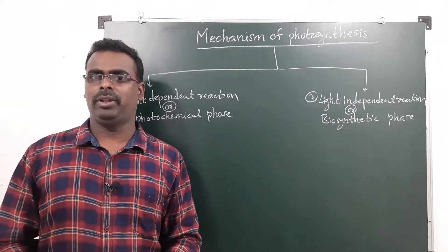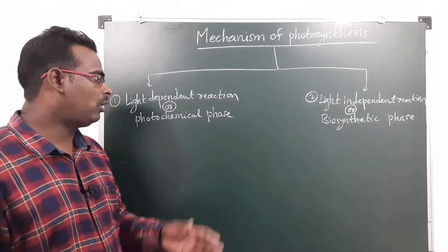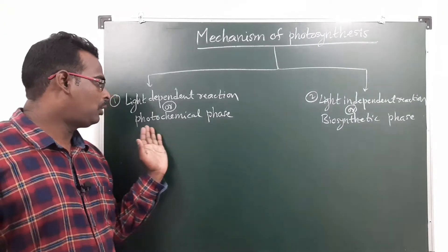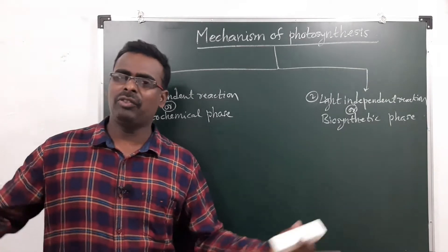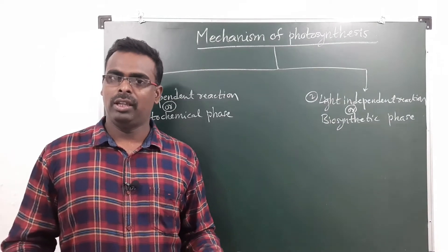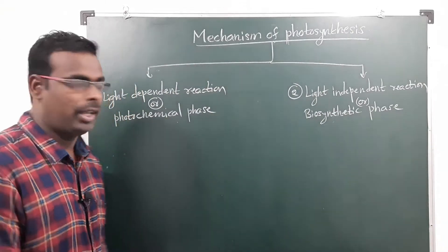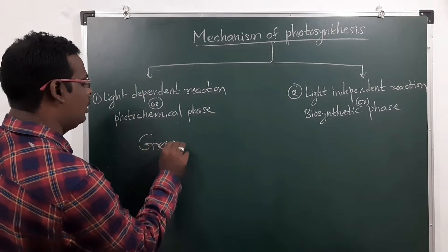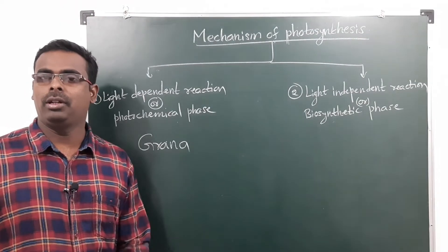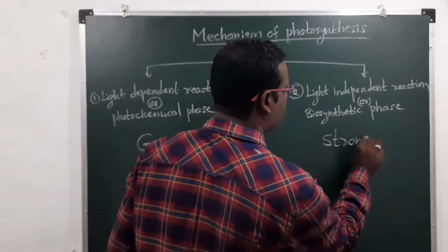In photosynthesis, many reactions take place, but some reactions take place only in the presence of light — those reactions are called the light dependent phase or photochemical phase. A series of chemical reactions occurs in quick succession, initiated by light. Light dependent reaction occurs in the grana of the chloroplast, while light independent reaction occurs in the stroma of the chloroplast.